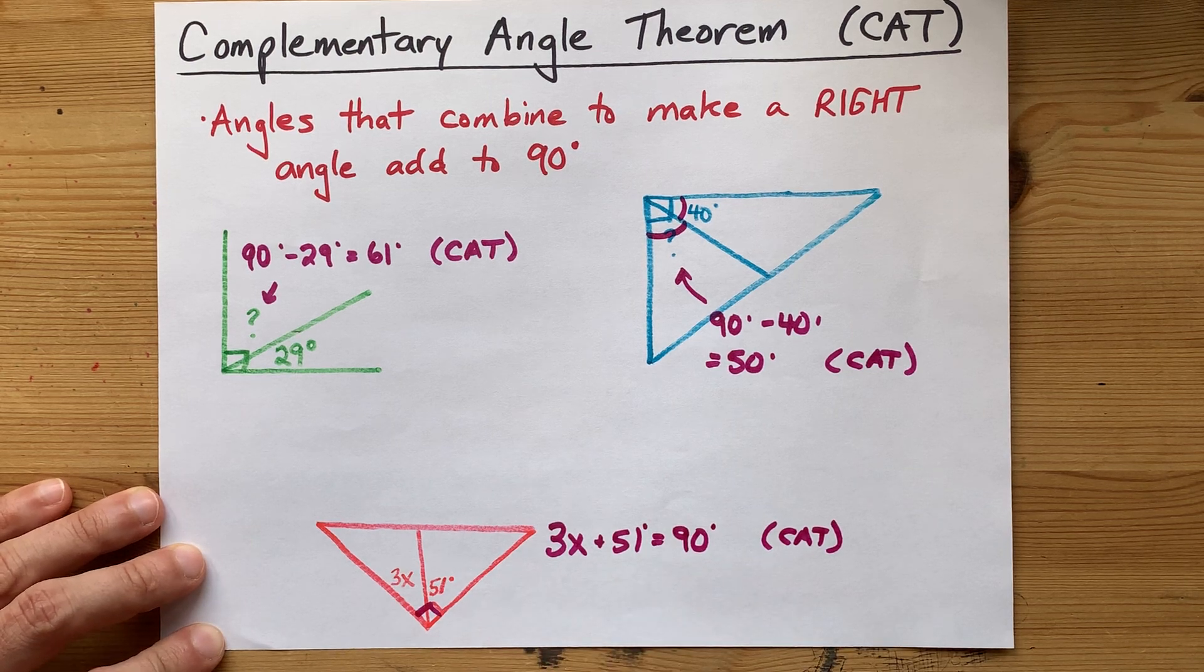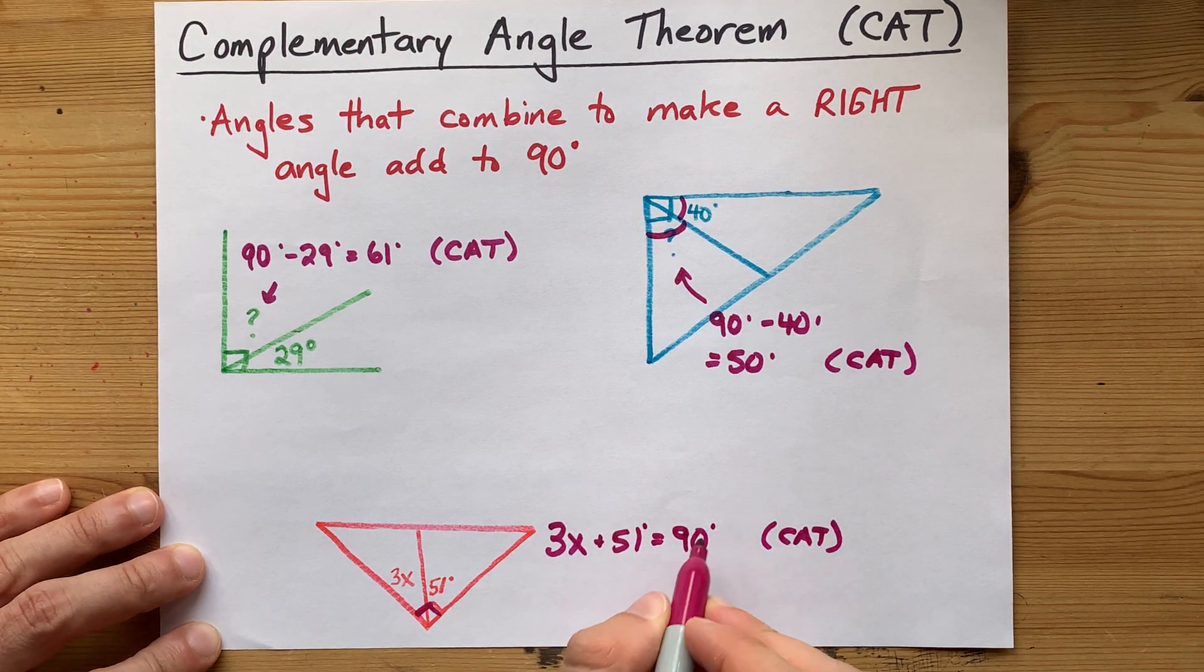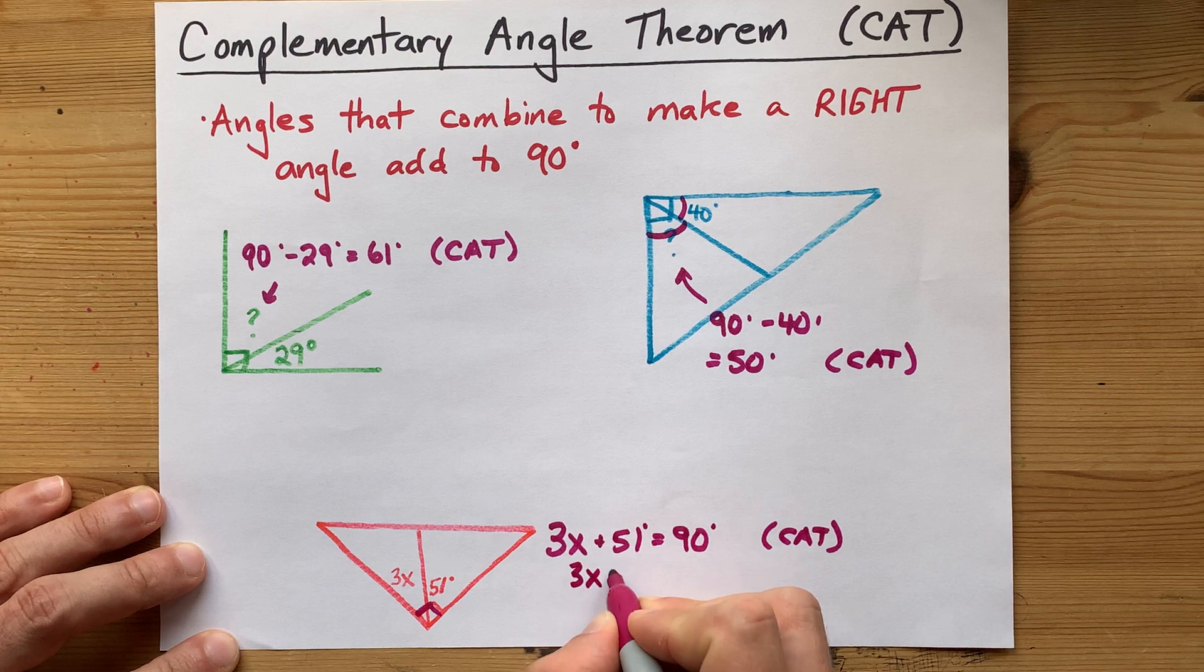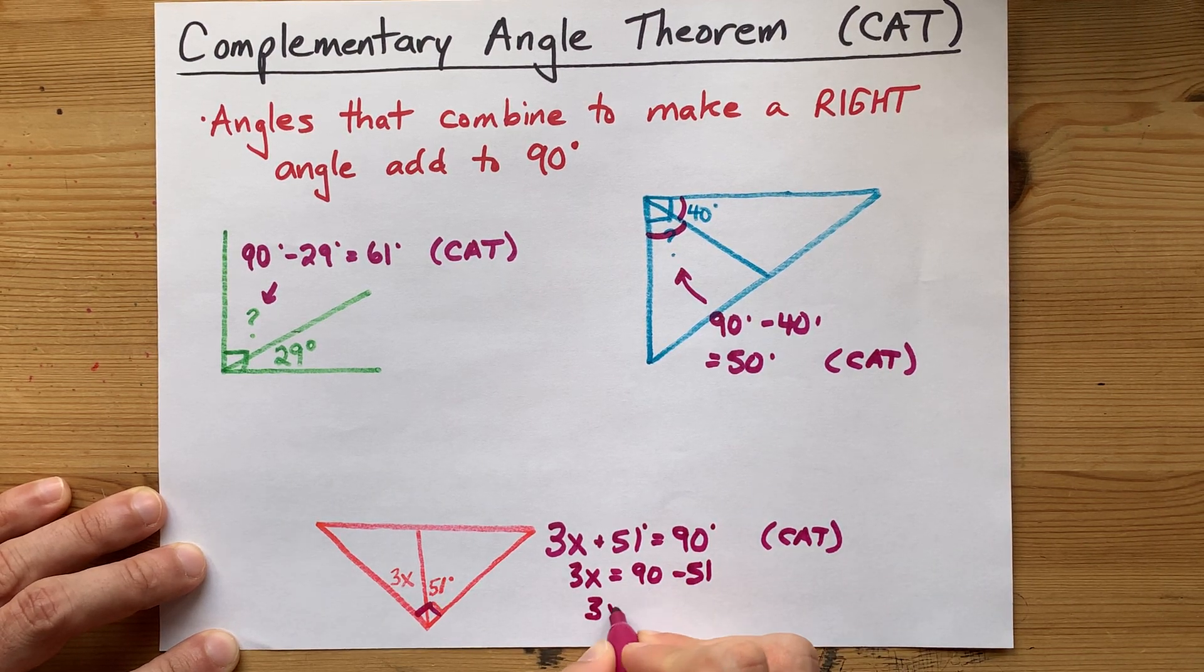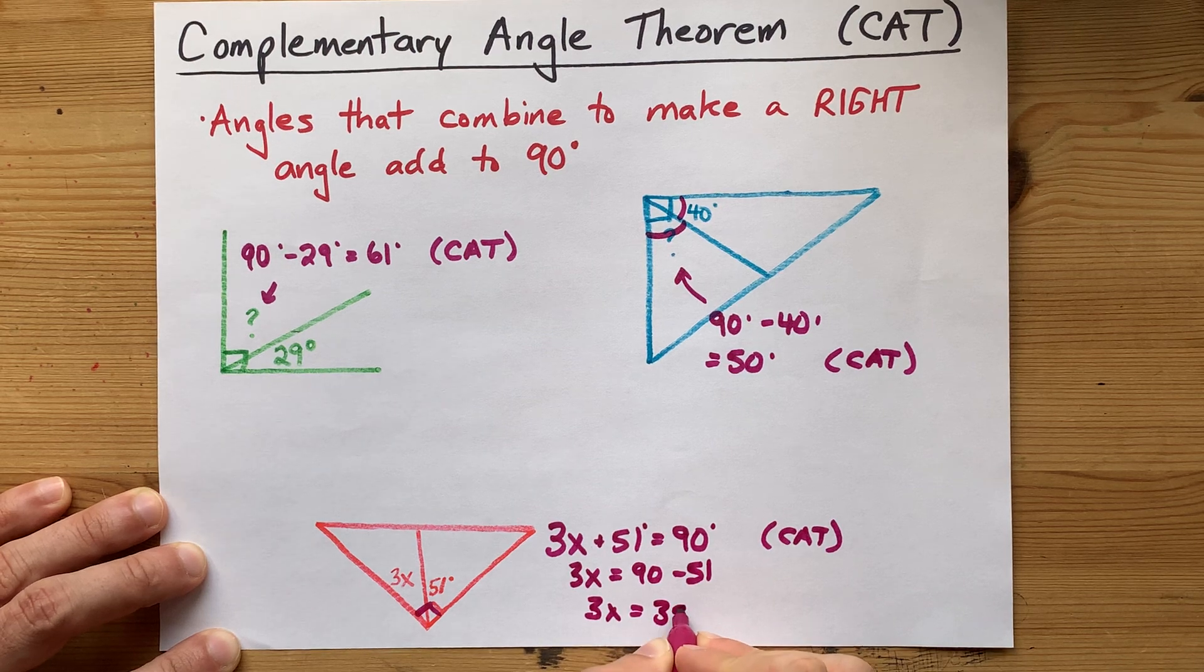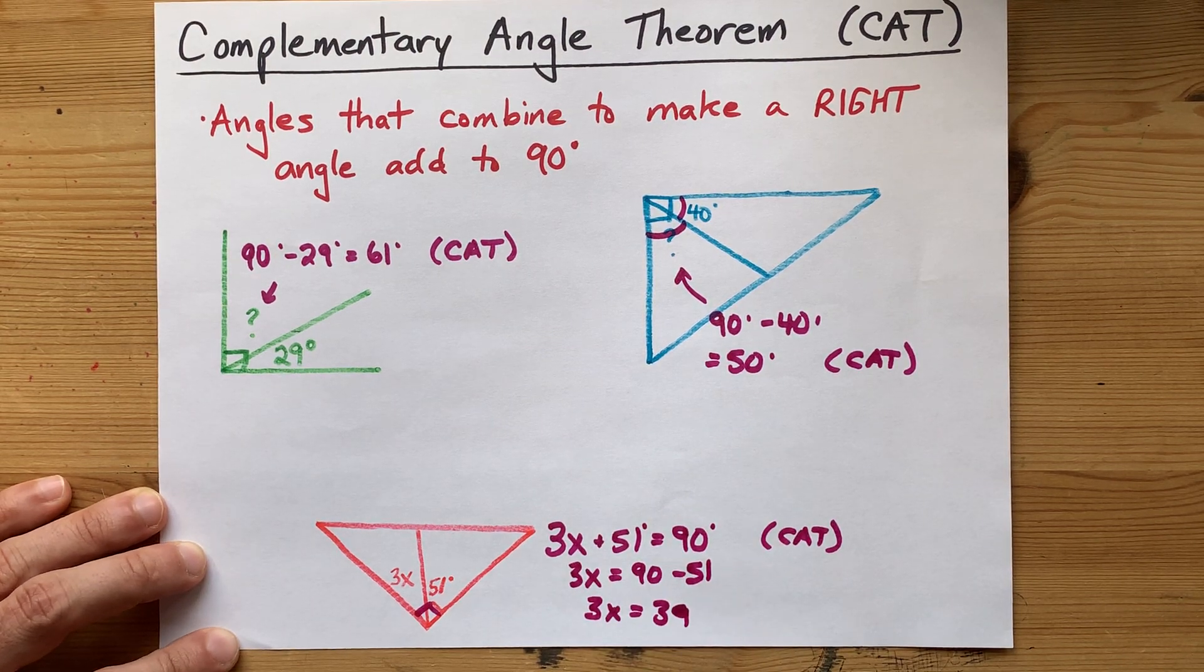Now, how do I solve an equation like that? Well, I can move the 51 to the other side. 90 minus 51. That gives me 39. 3x is equal to 39.